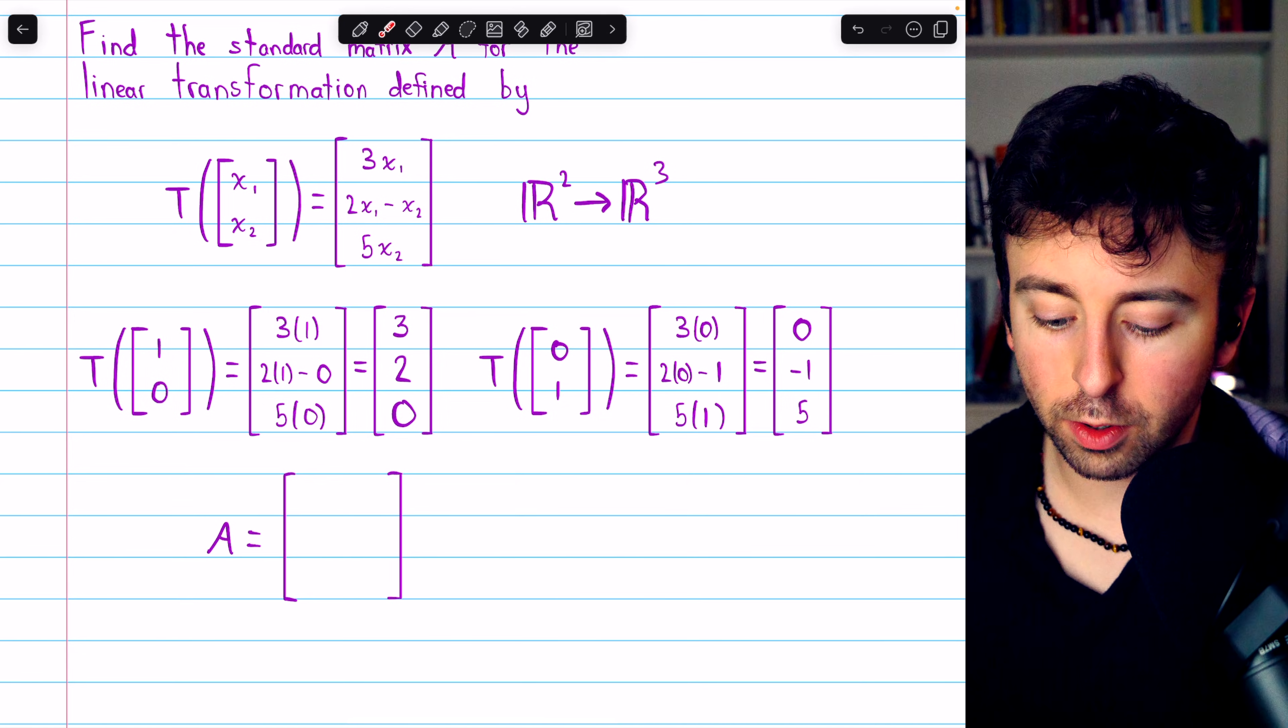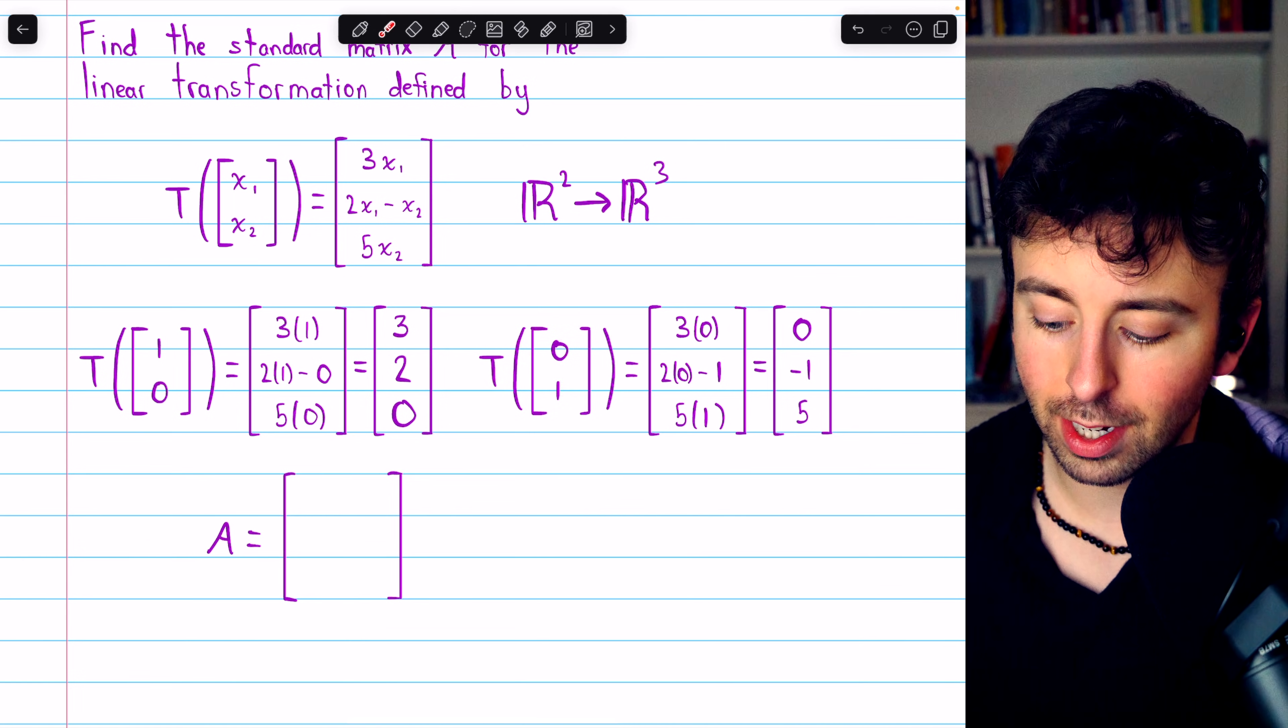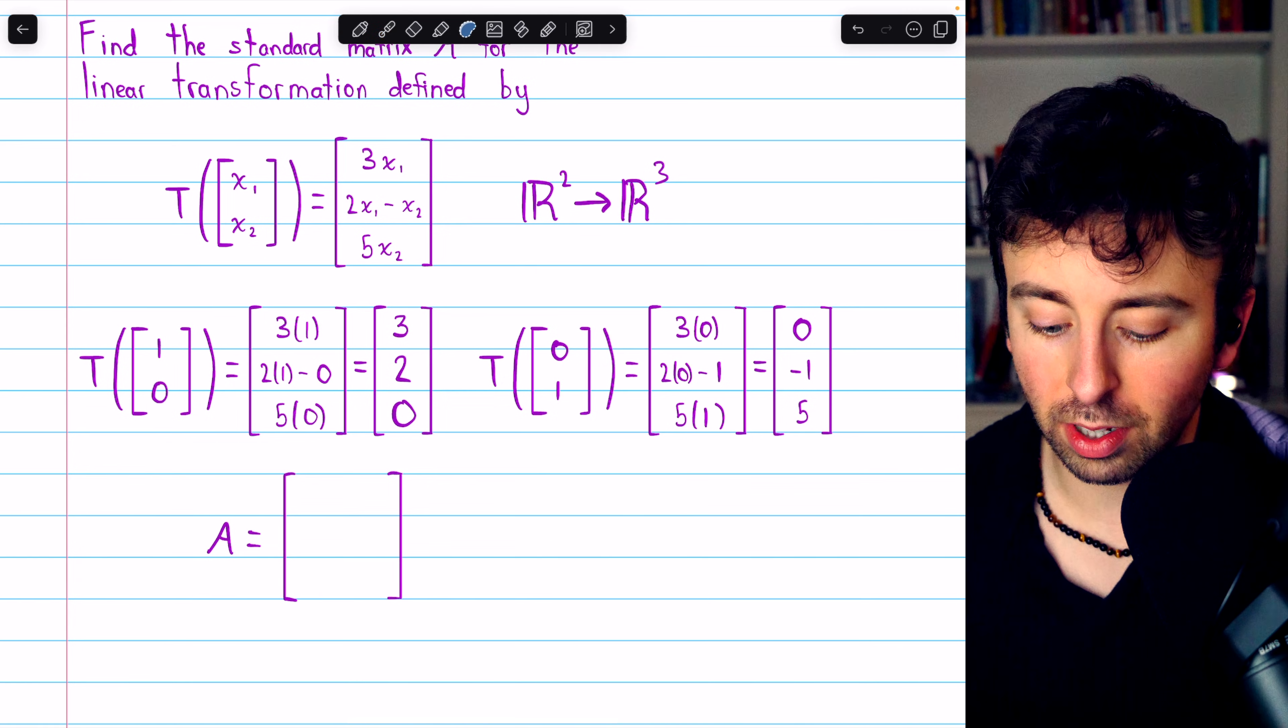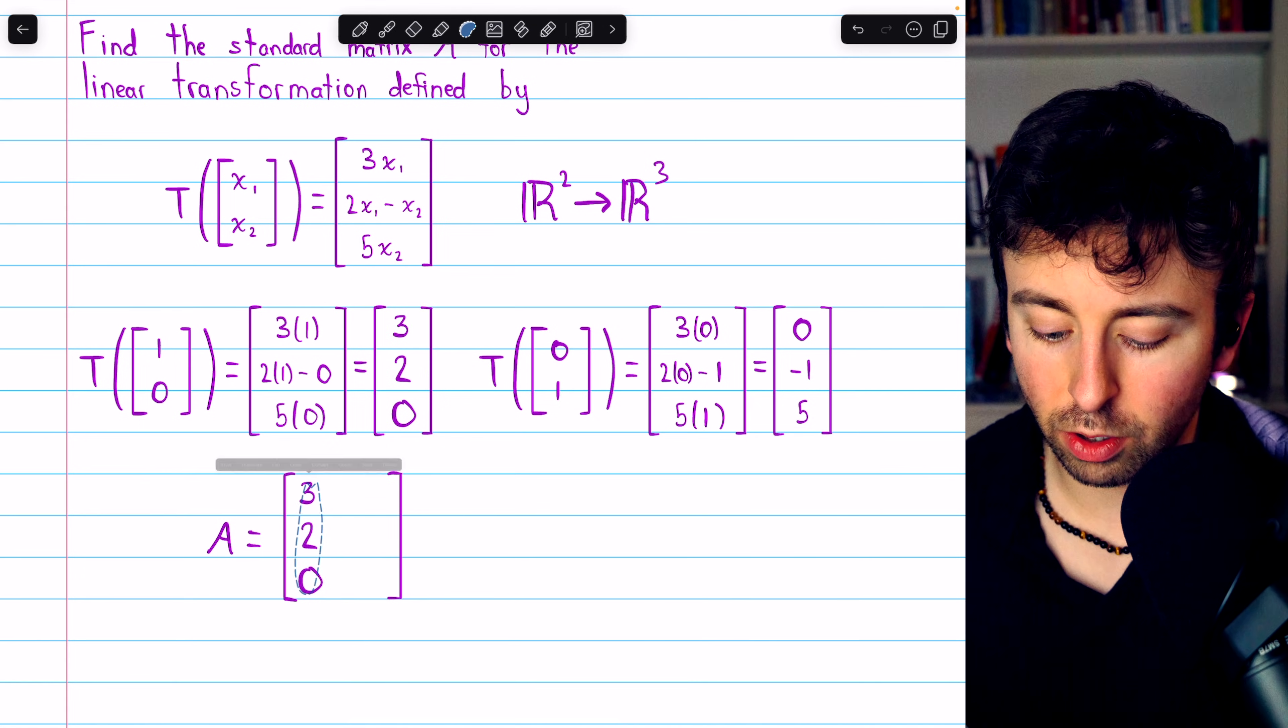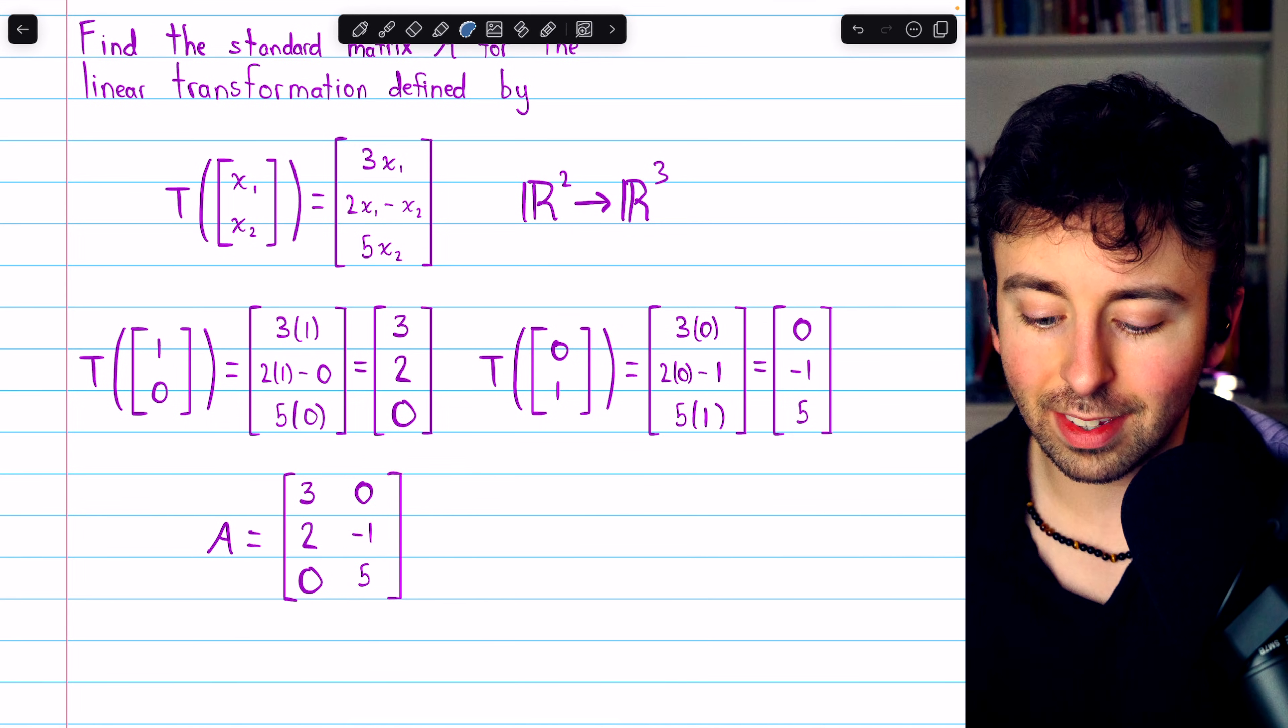If we plug in (1,0) to the transformation, we get this matrix here. And if we plug (0,1) into the transformation T, we get this column vector here. These two columns can be used to produce our standard matrix. So our standard matrix has 3, 2, 0 as its first column and 0, negative 1, 5 as its second column.